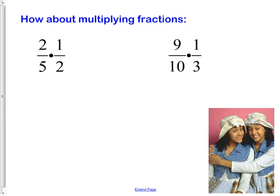So, what about multiply? Easy. Just multiply across. 2 times 1 is 2. 5 times 2 is 10. Done. 2 tenths. But you've got to reduce it at the end, which would be 1 fifth.